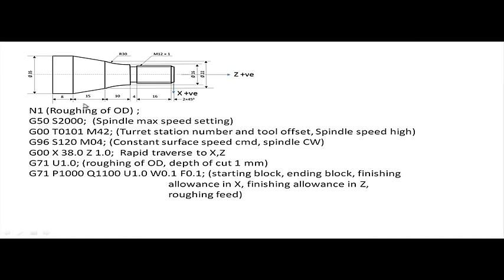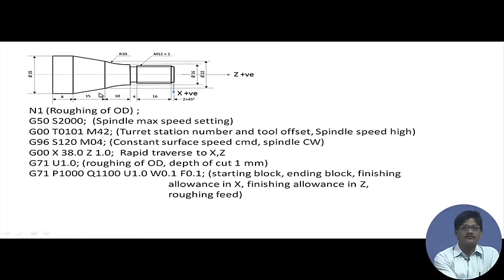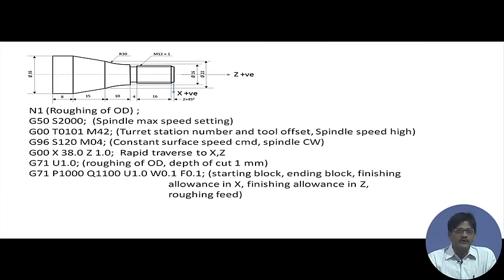First we will do roughing of the outer diameter values. Roughing means before taking the finishing cut, we do not worry much about feed or depth of cut. High feed gives coarse surface finish; high depth of cut causes large deviations because the part bends as a cantilever or simply-supported beam under high thrust forces. During coarse turning we do not bother much about these issues.